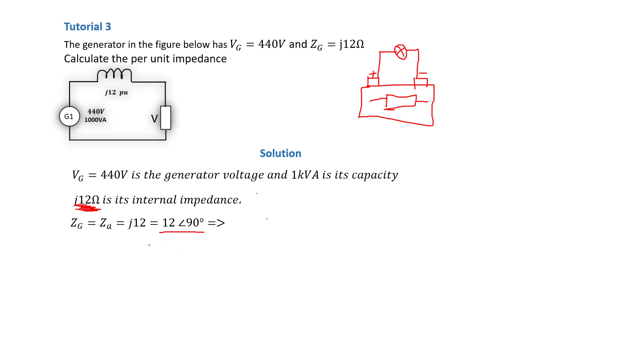When we convert that from rectangular form to polar form, we find that it is equal to 12 with an angle of 90 degrees. The 90 degrees here specifies that it is purely inductive because the impedance only has the imaginary part—it doesn't have a real part, so it's purely inductive.